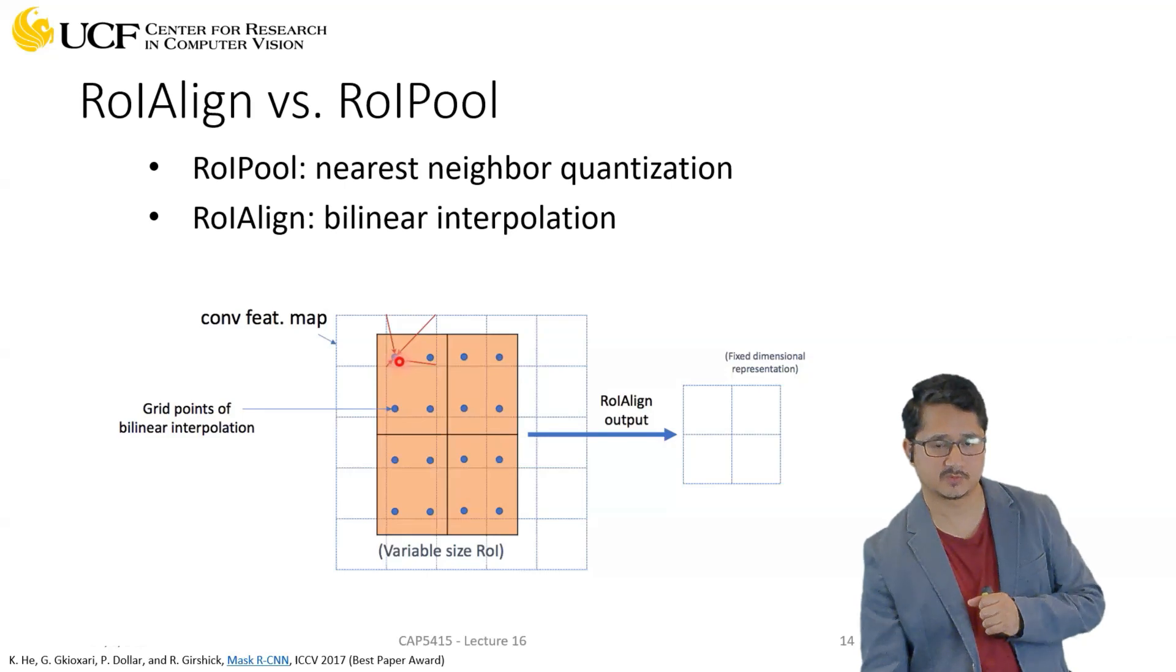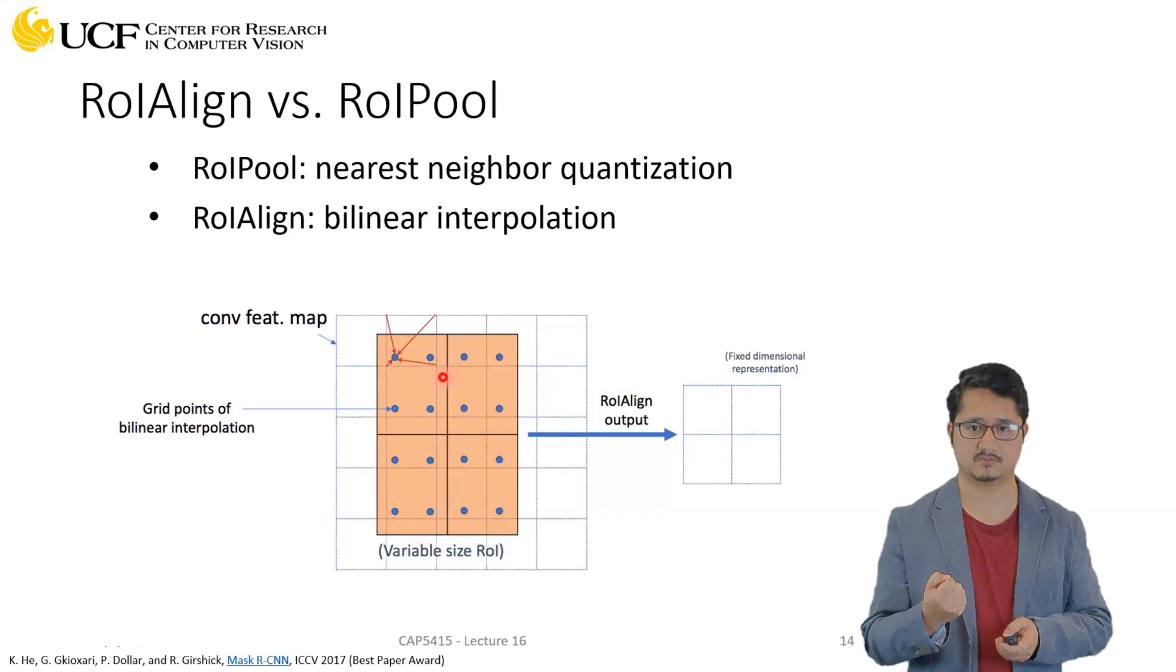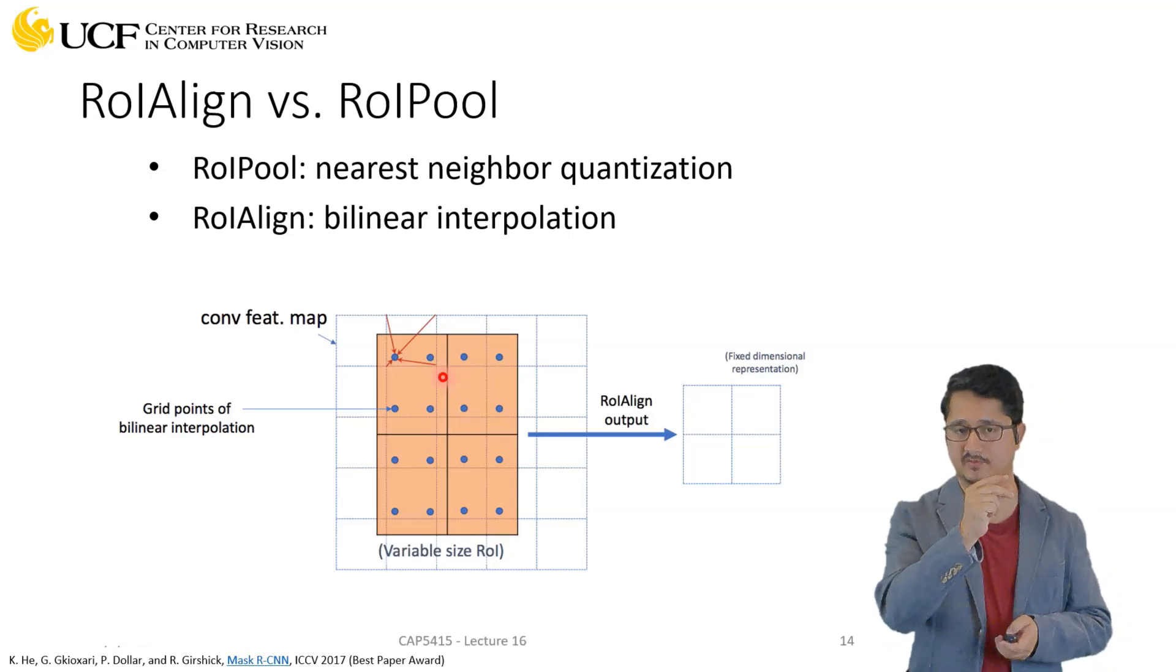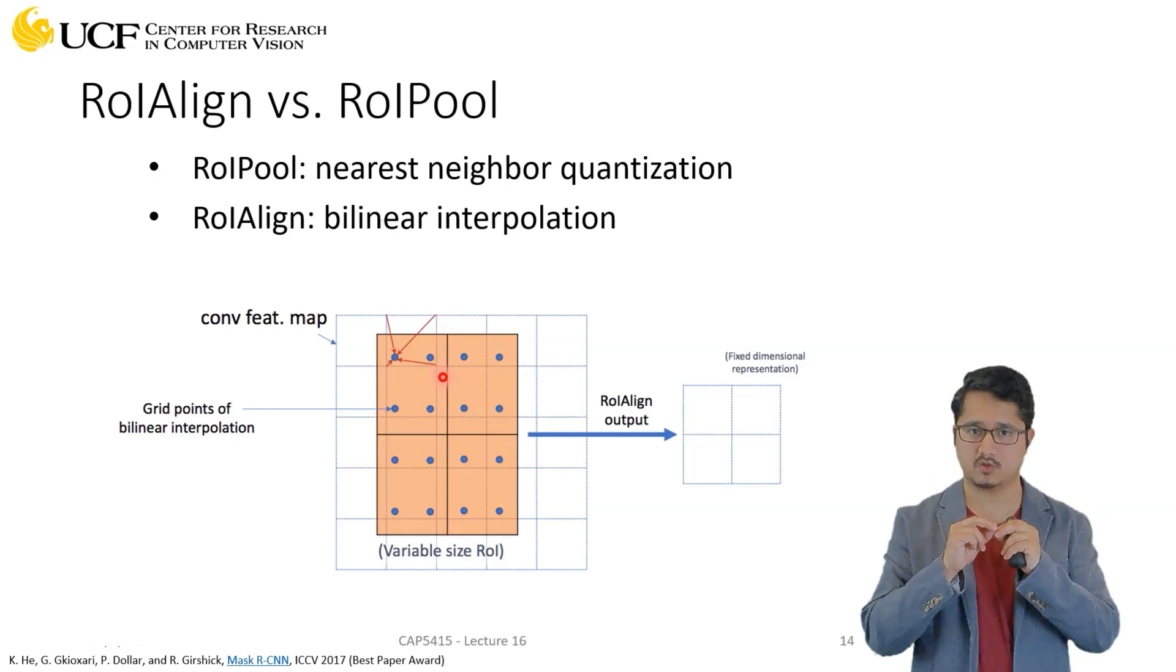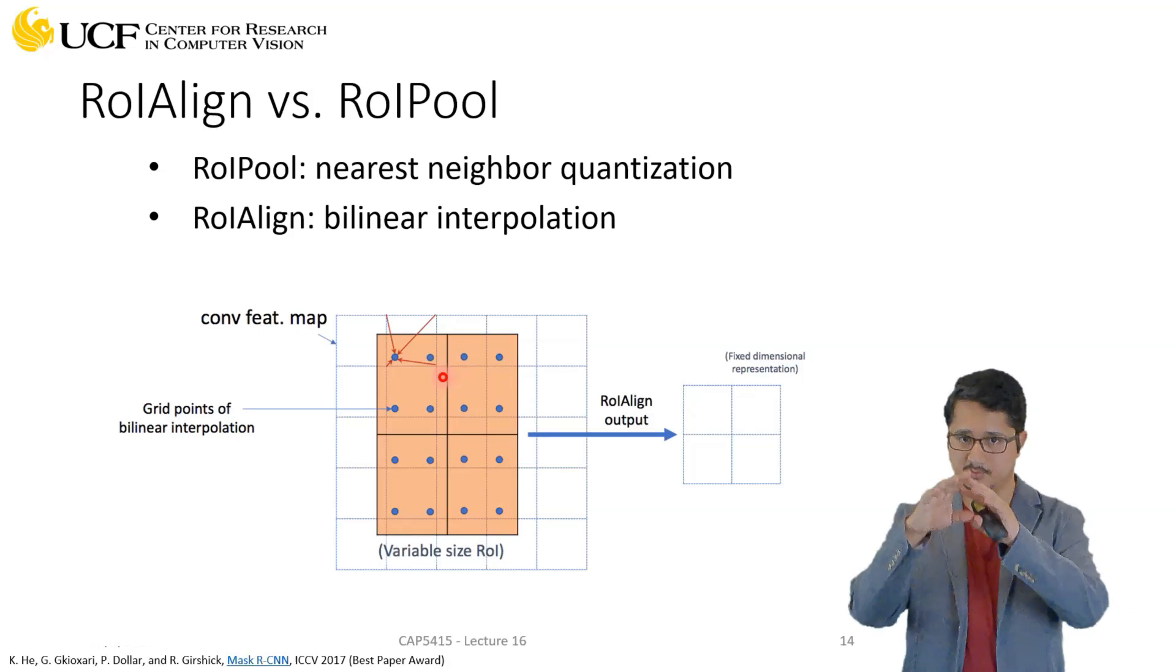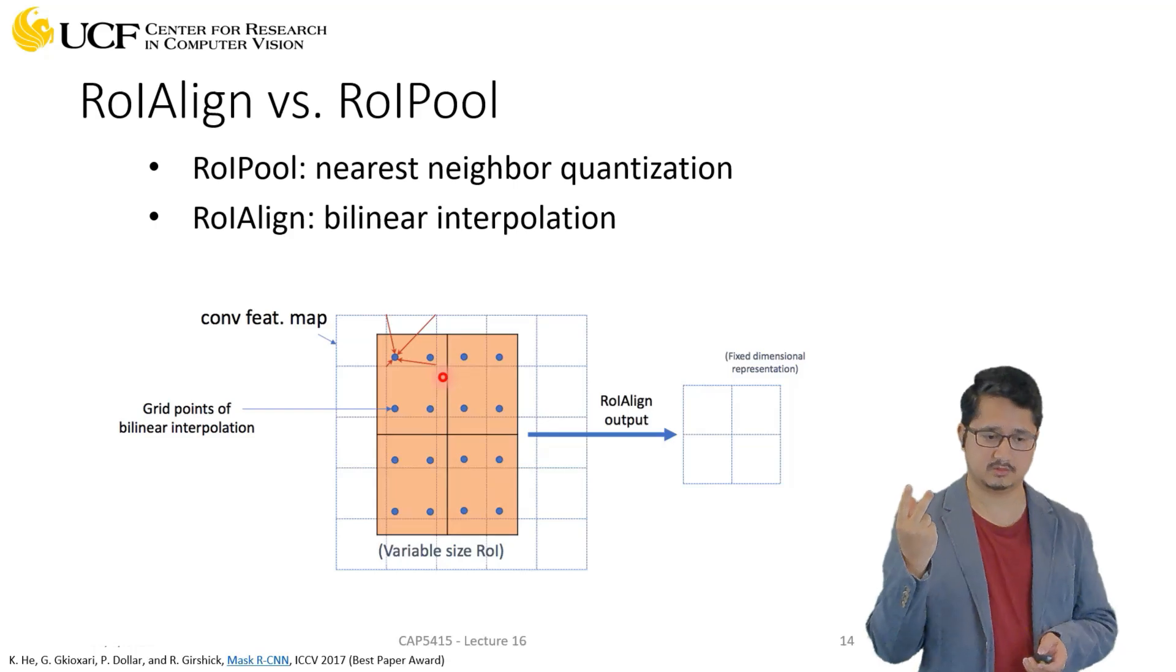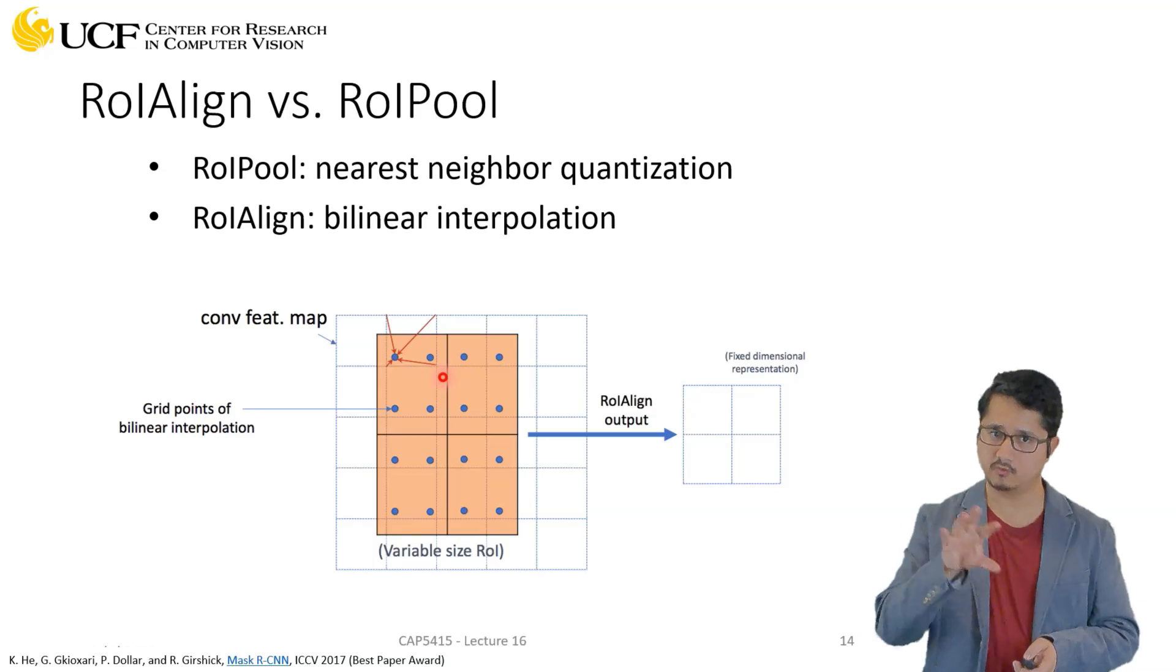And then what we do is we try to find out how far this point is from all these four coordinates, and using those distances we try to estimate the value for this. So it's not just copying over a value from one activation map to get the output, but we see what are the other pixel values or what are the other activation values in the proximity. And depending upon its position, its distance from all those values, we just use that bilinear interpolation equation to find that value. And just use that—so it will be some kind of weighted sum of all those values.